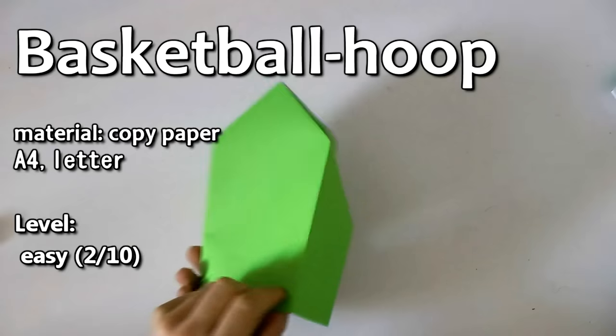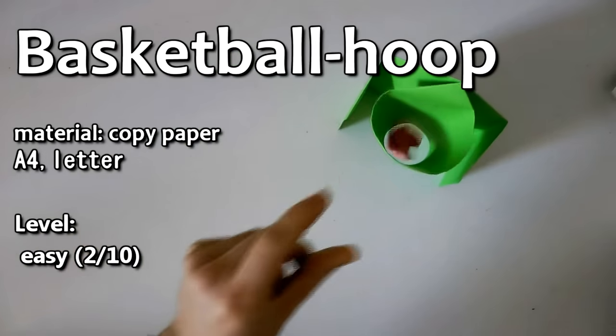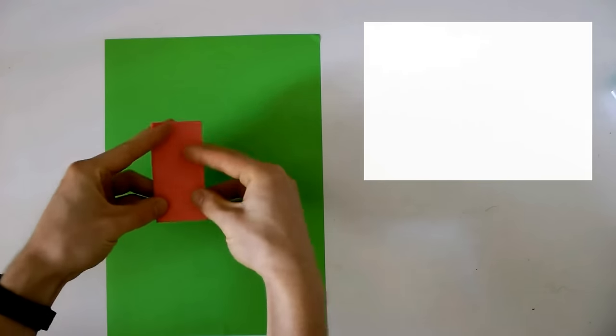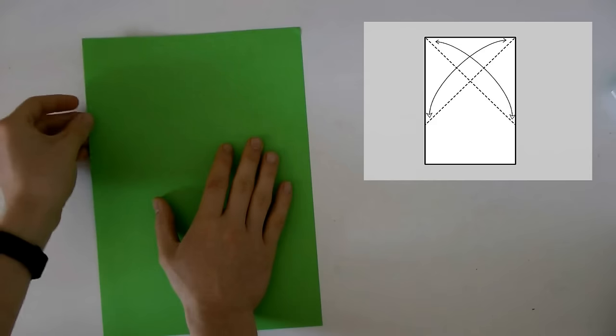The basketball hoop is a simple traditional origami model you can use for a little basketball game with paper. In the beginning, you can use an A4 sheet, half a square, or US letter - any rectangular sheet will do the trick.